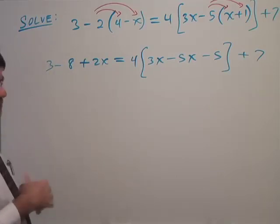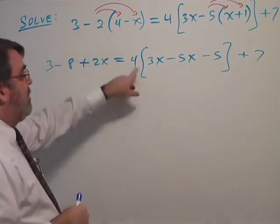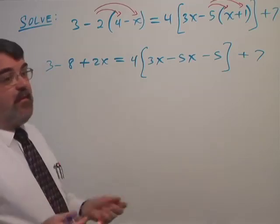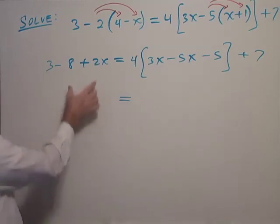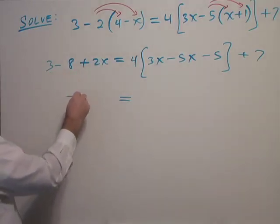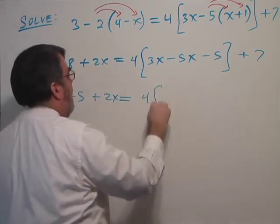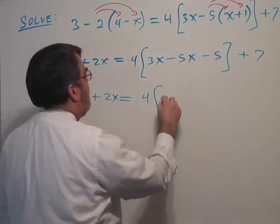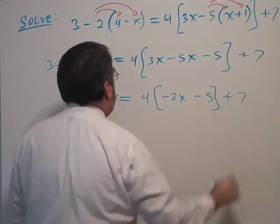I just think it's a good idea to go ahead and finish simplifying these terms, because when you start to multiply then you create larger numbers, you create more chances for errors. Alright, so let's see, on the left side I'm going to combine these terms: 3 minus 8 is negative 5 plus 2x. On the right side, 4 bracket, I'll combine these terms and I get 3x minus 5x is negative 2x minus this 5 plus 7.